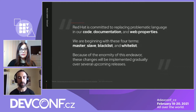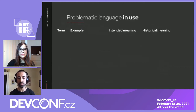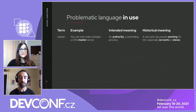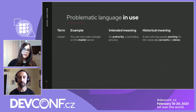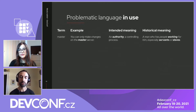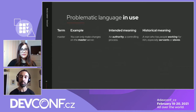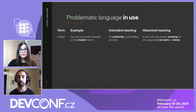If you've never come across these words, you may be wondering how they're being used. For example, the word master could be used as: you can only make changes on the master server. The intention is to convey some sort of authority, like a controlling process. But the only way we get that meaning is based on the historical meaning — that a master is a man who has people working for him, especially servants or slaves.